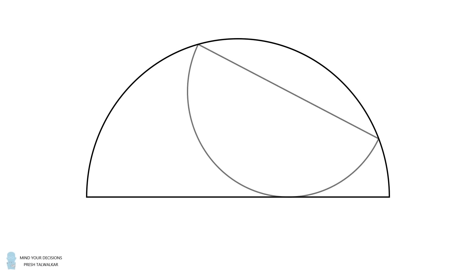A semicircle contains an inscribed semicircle whose arc is tangent to the diameter of the large semicircle, dividing it into distances of 2 and 1. If the inscribed semicircle has a diameter whose length is equal to y, solve for the value of y.